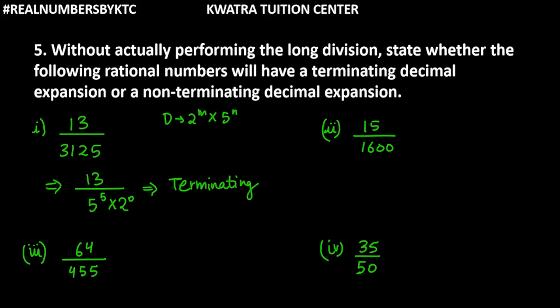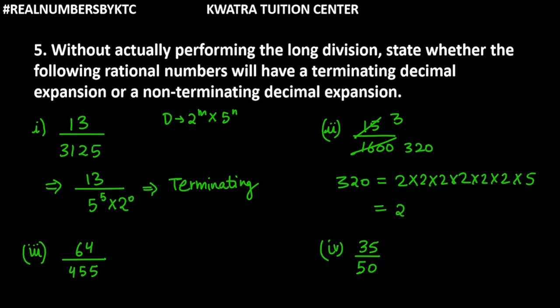Now let's do the second part. We have 15 over 1600. You can reduce it by dividing by 5, giving 3 over 320. When you factorize 320, you get 2 multiplied 6 times, times 5. So the denominator is 2 raised to power 6 and 5 raised to power 1.